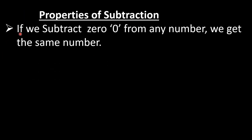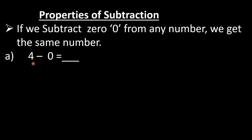First property: if we subtract 0 from any number, we get the same number. Let's see how. Like in A part, 4 minus 0 — that is 0, the number itself. Then 10 minus 0, again we will get 10.